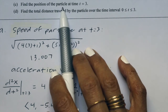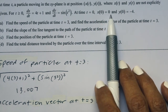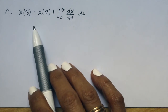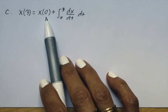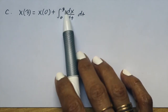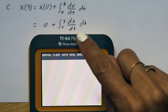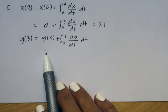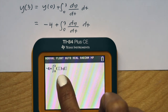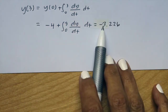Part C says find the position of the particle when time t equals 3. We use our initial conditions: when t equals 0, x equals 0 and y equals negative 4. We set up x(3) equals x(0) plus the integral from 0 to 3 of dx/dt. Since x(0) is 0, we use the definite integral from 0 to 3 of dx/dt, which is y1, and get 21. For y: y(3) equals y(0) plus the integral from 0 to 3 of dy/dt. y(0) is negative 4, so we have negative 4 plus the integral from 0 to 3 of y2, and get negative 3.226.